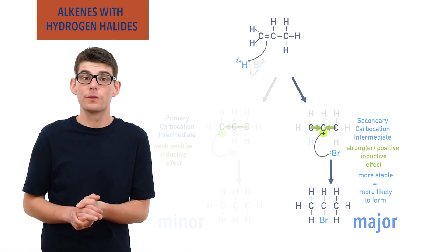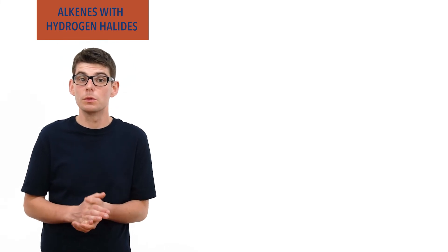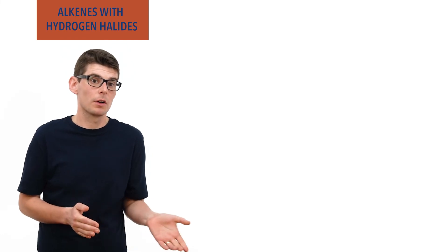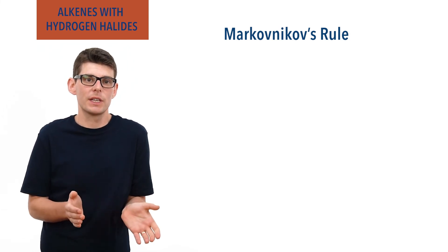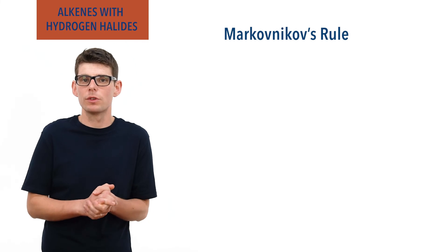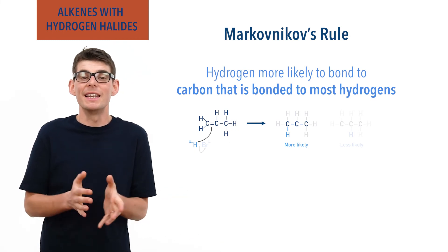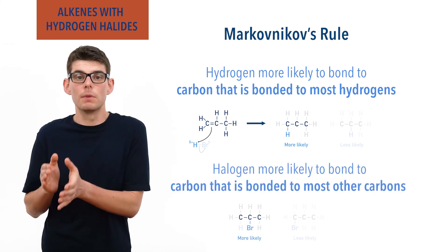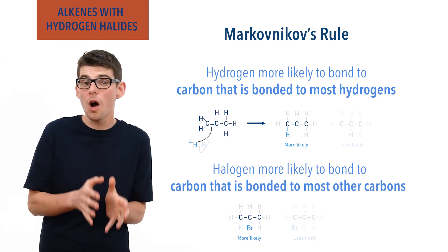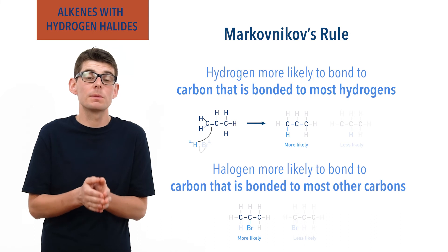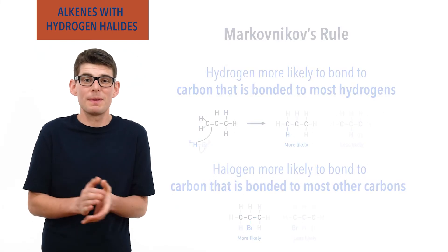The ability of alkenes to react to form major and minor products in addition reactions was noticed in the 19th century by a Russian chemist called Markovnikov, and he proposed the rule, now called the Markovnikov rule, to predict the major product in such reactions. In simplified form, the rule states that the hydrogen in a hydrogen halide will more likely get attached to the carbon bonded to the most hydrogens, and therefore the fewest carbons, leaving the halide ion bonding more to the carbon that is bonded to the most other carbon atoms in the alkene. At this level of study, however, it is important to understand why major and minor products are produced in terms of carbocation stability rather than simply remembering Markovnikov's rule.